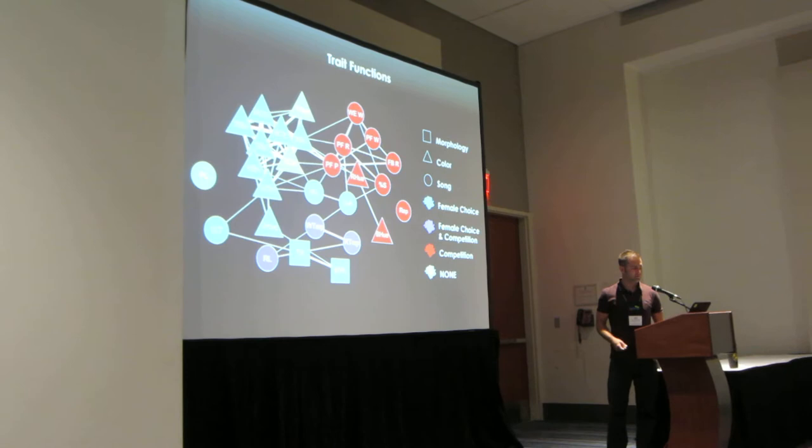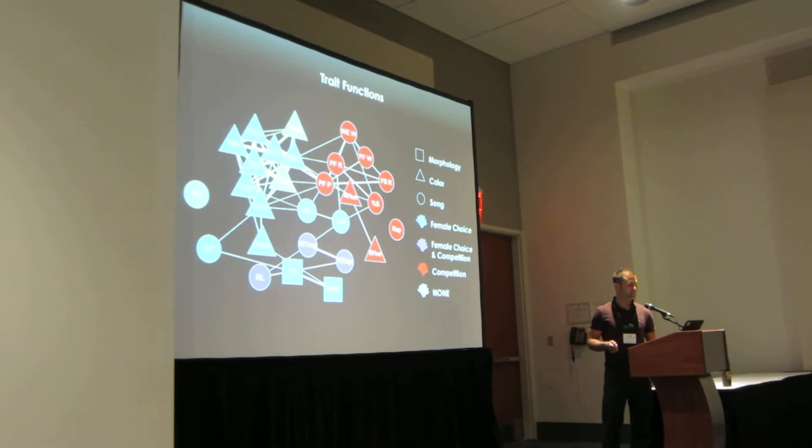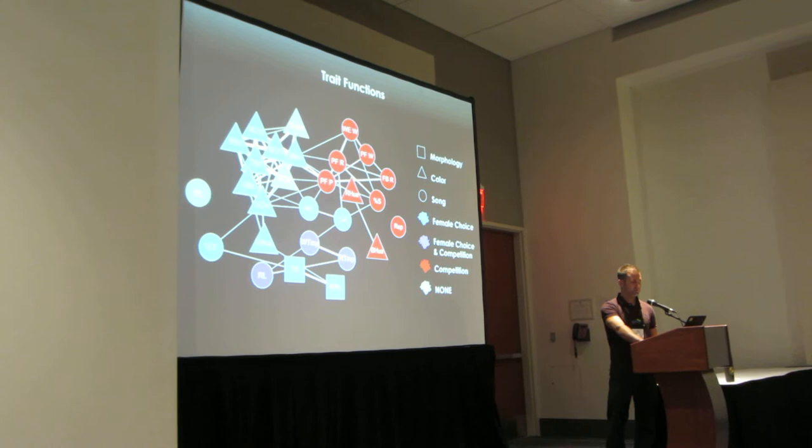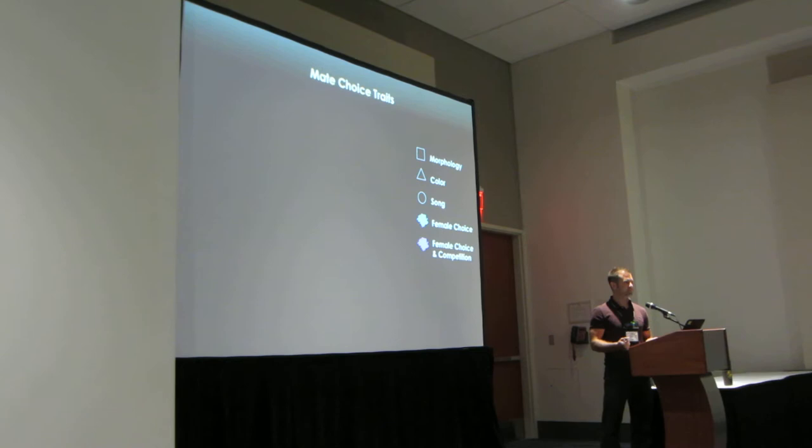This is immediately interesting because females are using a different set of traits for choosing mates compared to the traits that males are using to compete against each other, with the exception of these three traits. We can zoom in on this by removing the traits that weren't important, focusing on the traits that were important for female choice. This network is rearranged based on a string algorithm which maximizes spaces and minimizes crossing between connections between nodes.